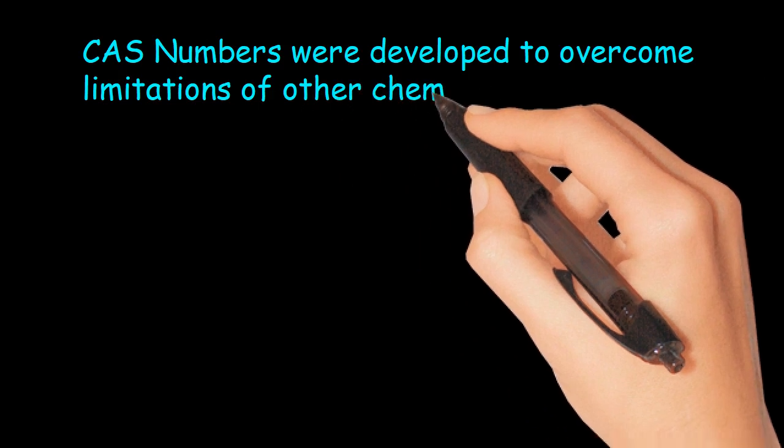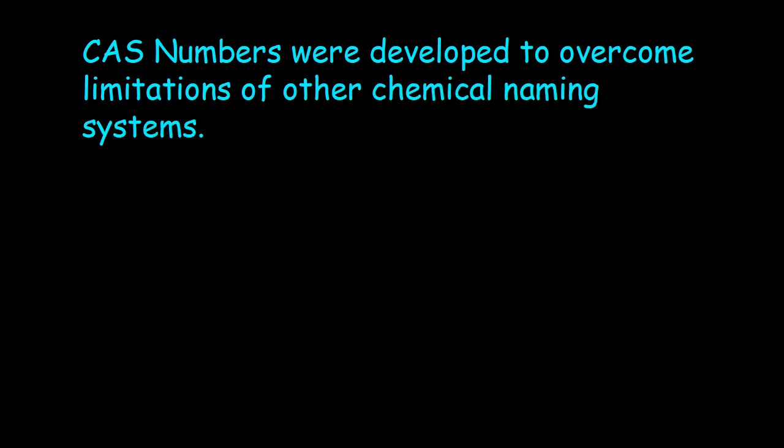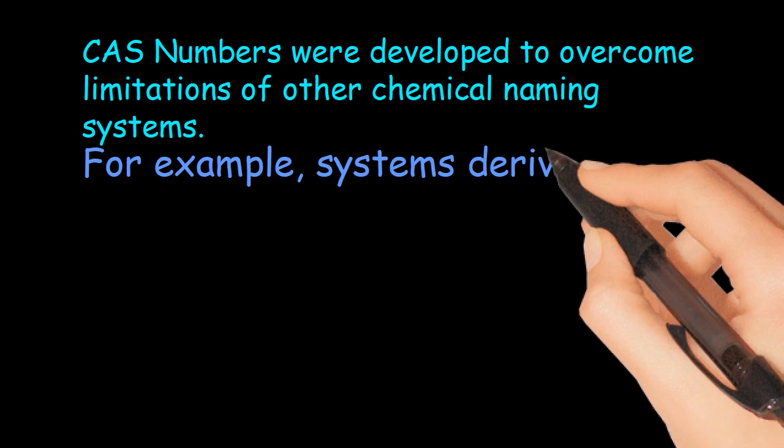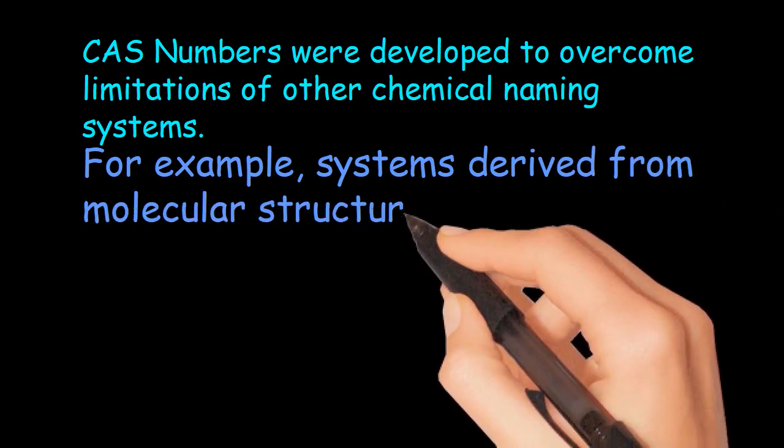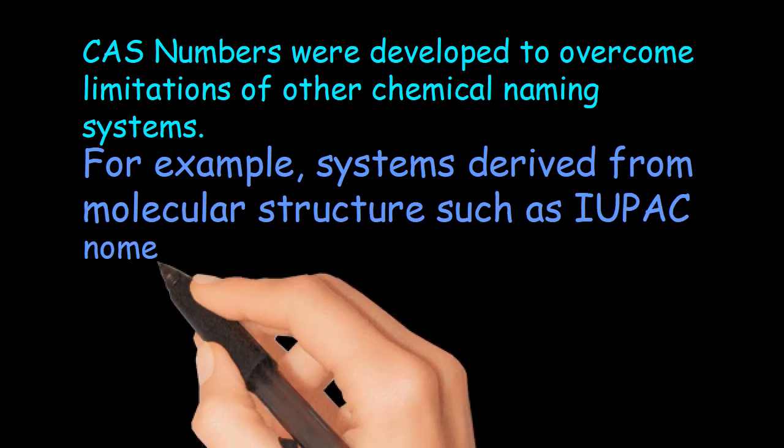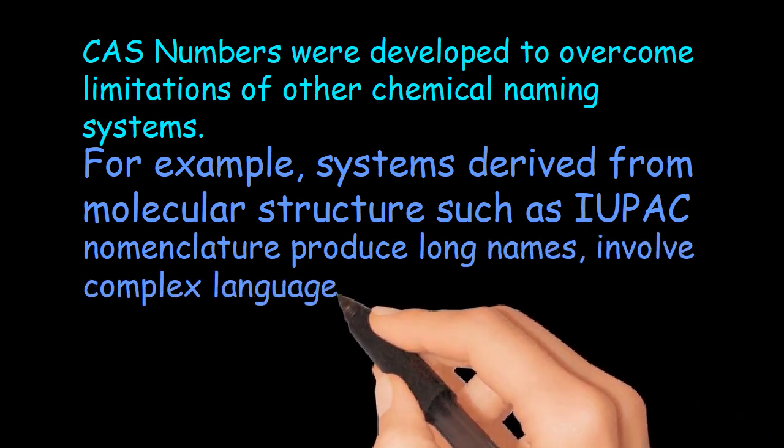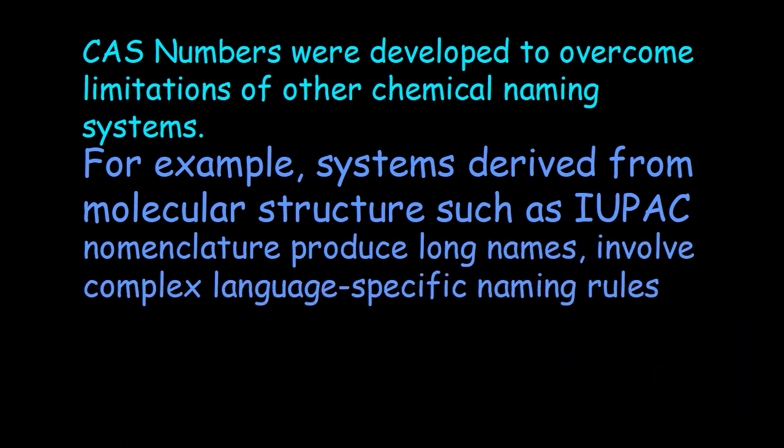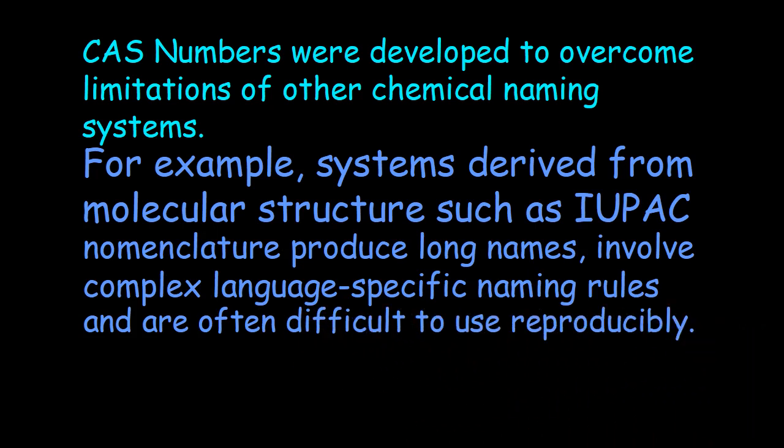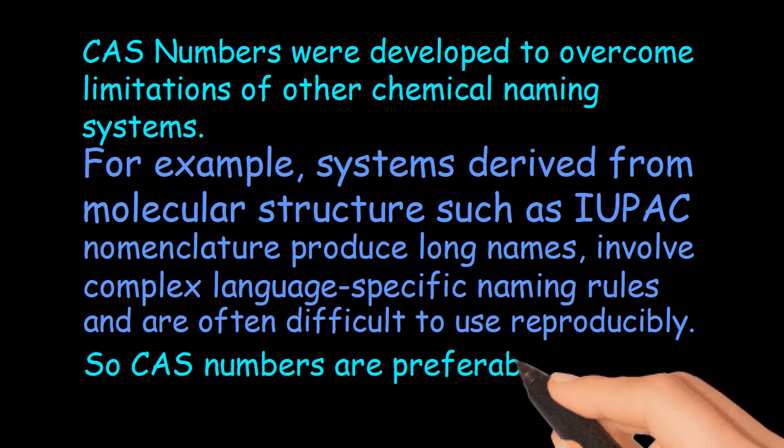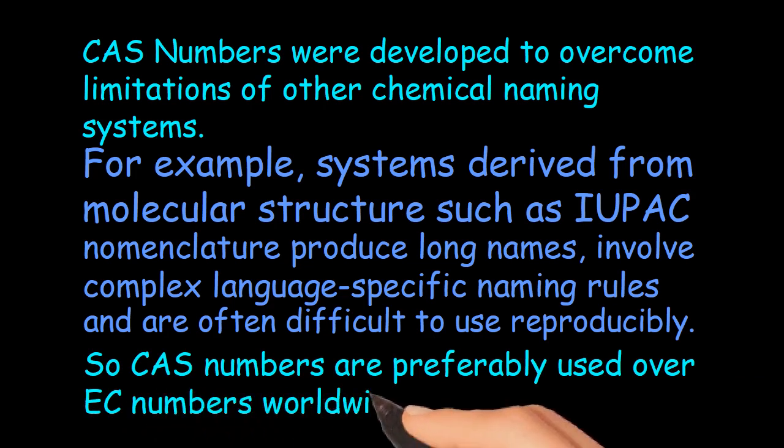CAS numbers were developed to overcome limitations of other chemical naming systems. For example, systems derived from molecular structure such as IUPAC nomenclature produce long names, involve complex language-specific naming rules, and are often difficult to use reproducibly. So CAS numbers are preferably used over EC numbers worldwide.